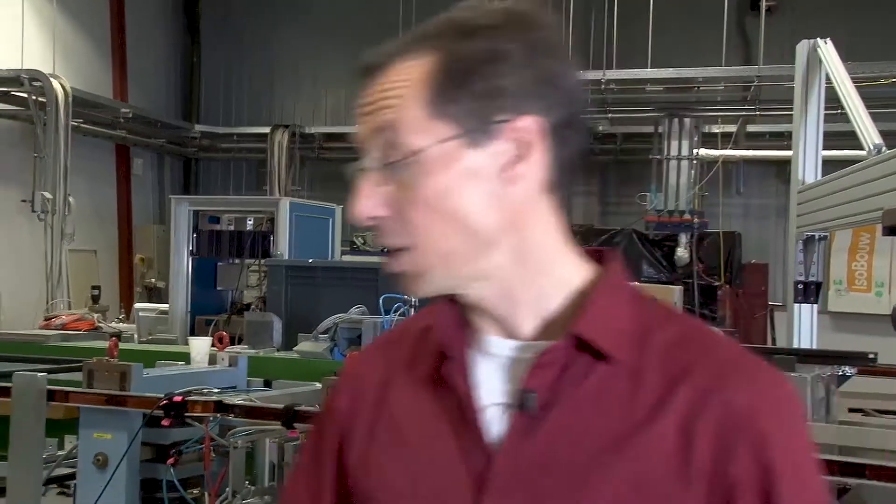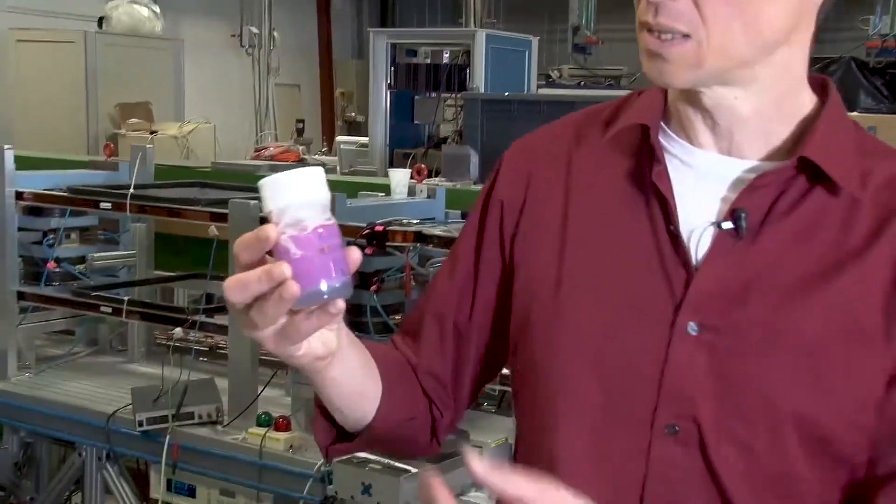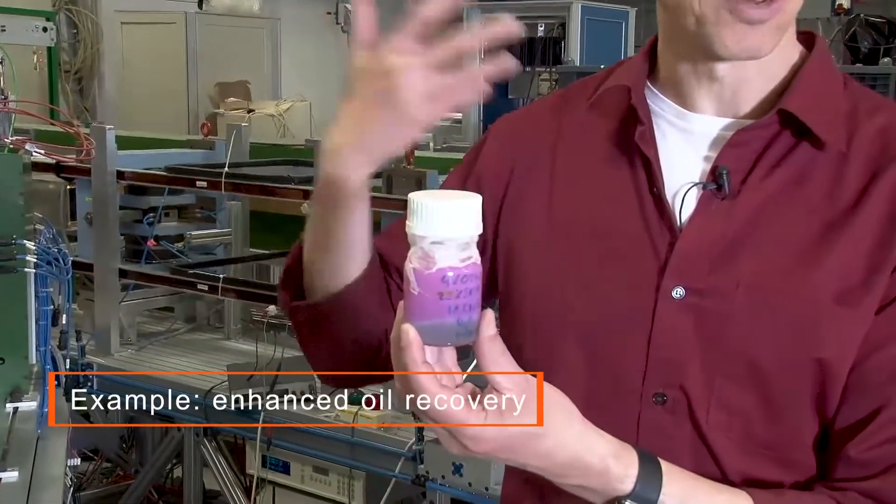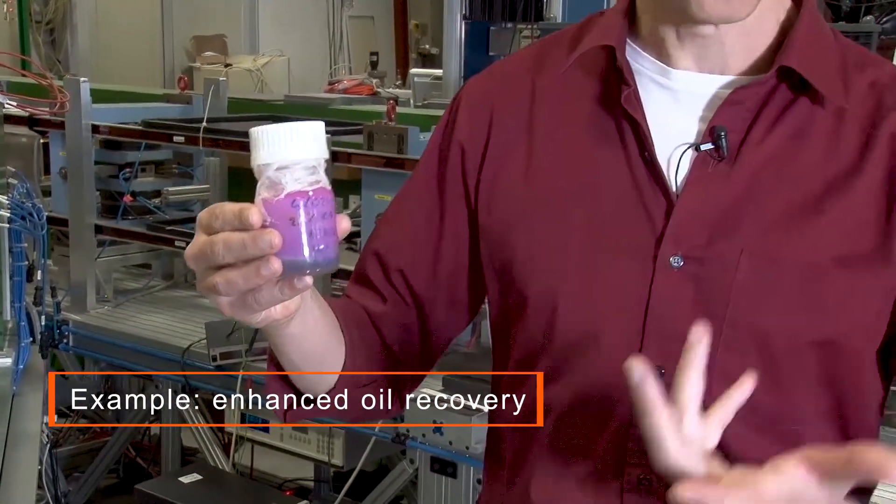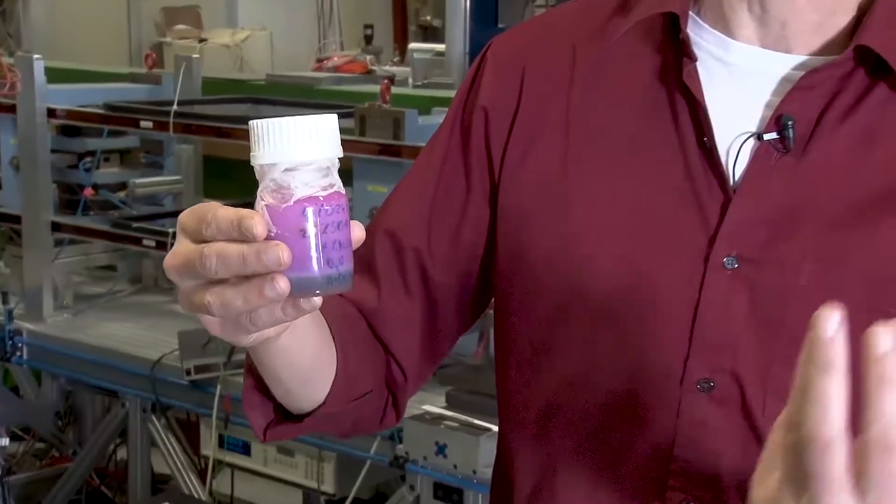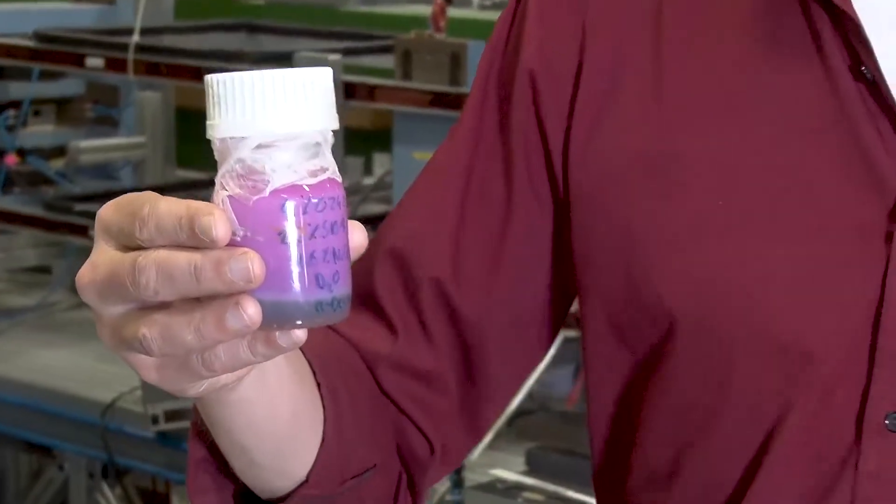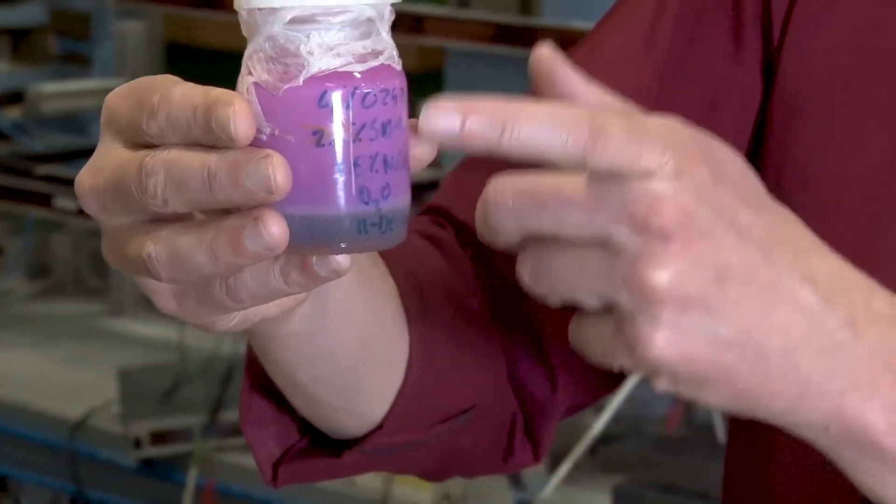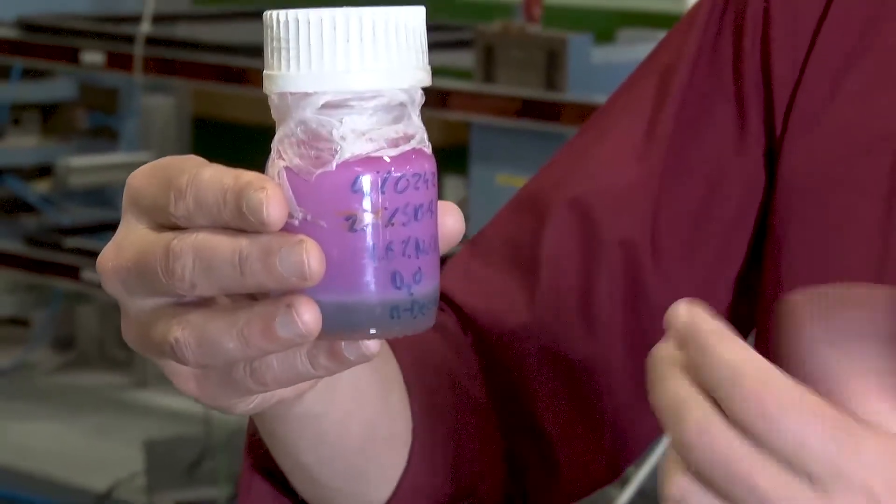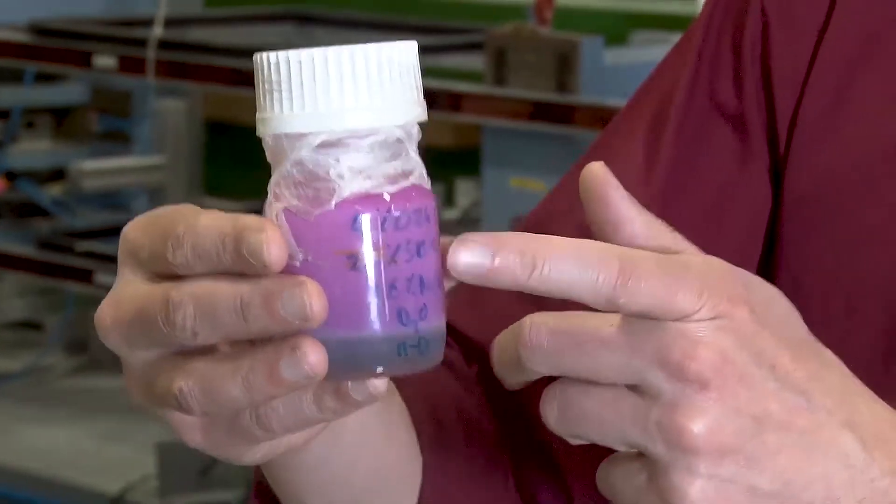One of the applications that we have of this technique is looking at how you can get the last bits of oil out of the ground. If you have normal oil, it's very viscous and it's difficult to get it out of the ground. If you now inject water and a surfactant, you get micro-emulsion, a little bit like vinaigrette in a salad dressing. And that's much less viscous. This is one of the applications which we work together with Shell.